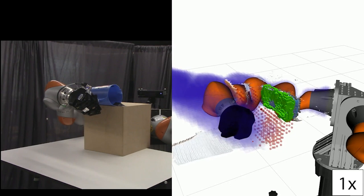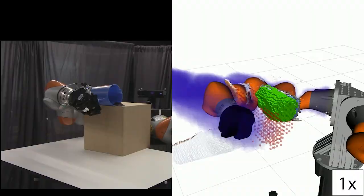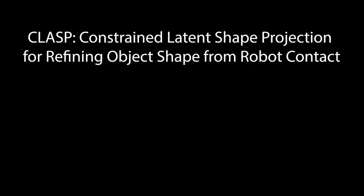We envision CLASP used in longer horizon robot tasks where the robot must fill in details, such as the pitcher handle, before it can complete its task. CLASP also allows the robot to recover from unexpected contact. CLASP allows the robot to use the information, update its belief, and replan. Details and further discussions are available in the paper.